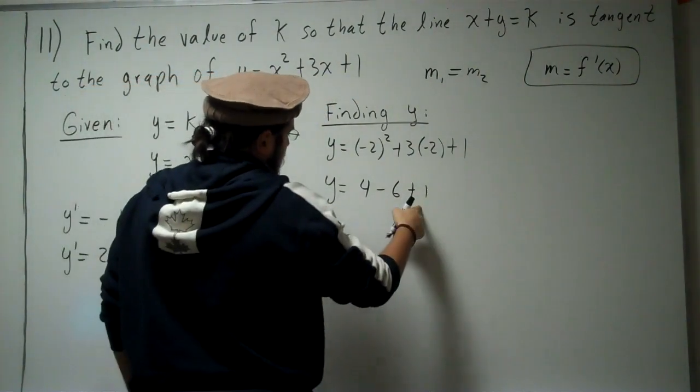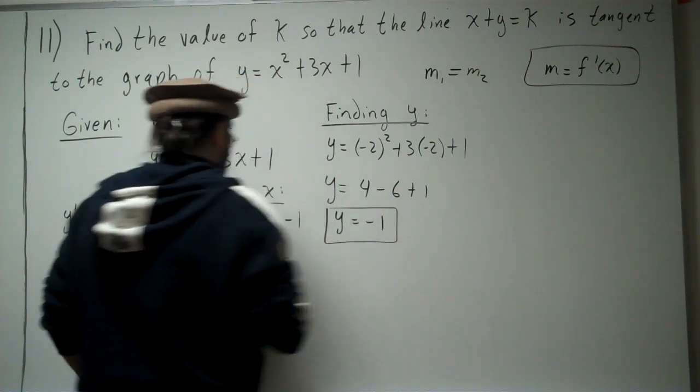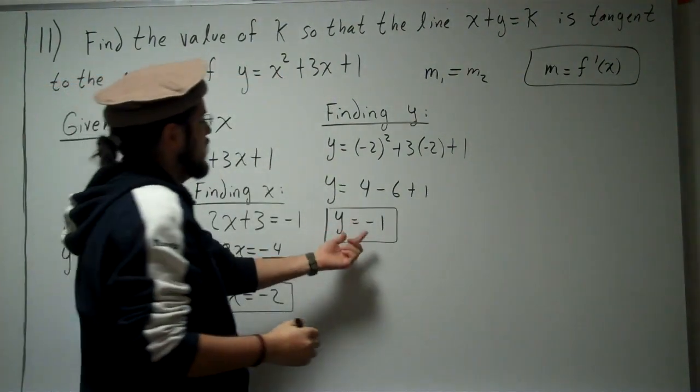So 4 plus 1 is 5. 5 minus 6, y equals negative 1. So now we have x equals negative 2, y equals negative 1.